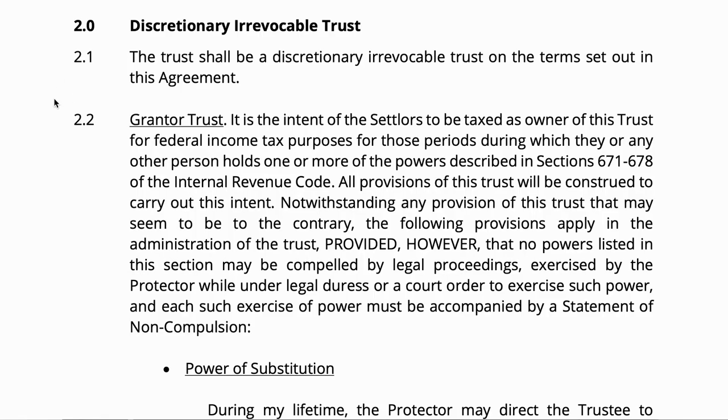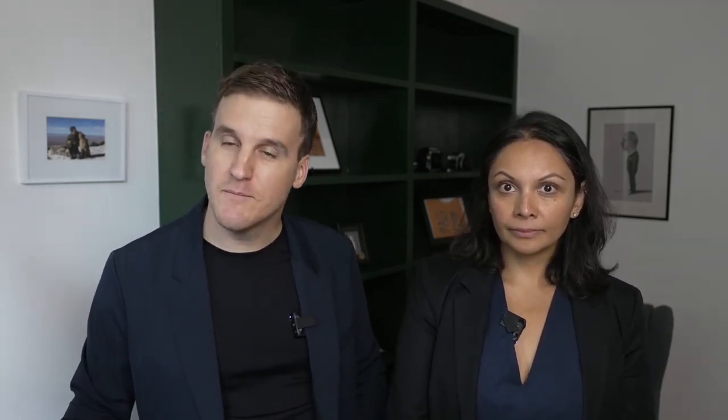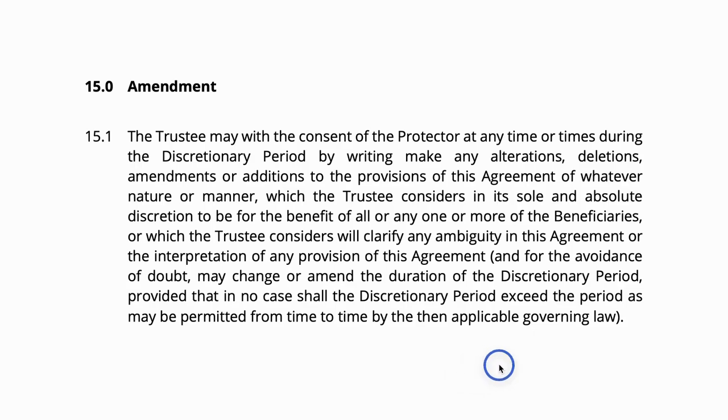So let's look at some language from an irrevocable asset protection trust. Here we have a discretionary irrevocable trust: 'The trust shall be a discretionary on the terms set out in this agreement.' You go through the terms of the agreement, and you will see: 'The trustee may, with the consent of the protector at any time or times during the discretionary period, by writing, make any alterations, deletions, amendments, or additions to the provisions of this agreement.' Essentially, an asset protection trust can be modified or altered, depending on the situation.